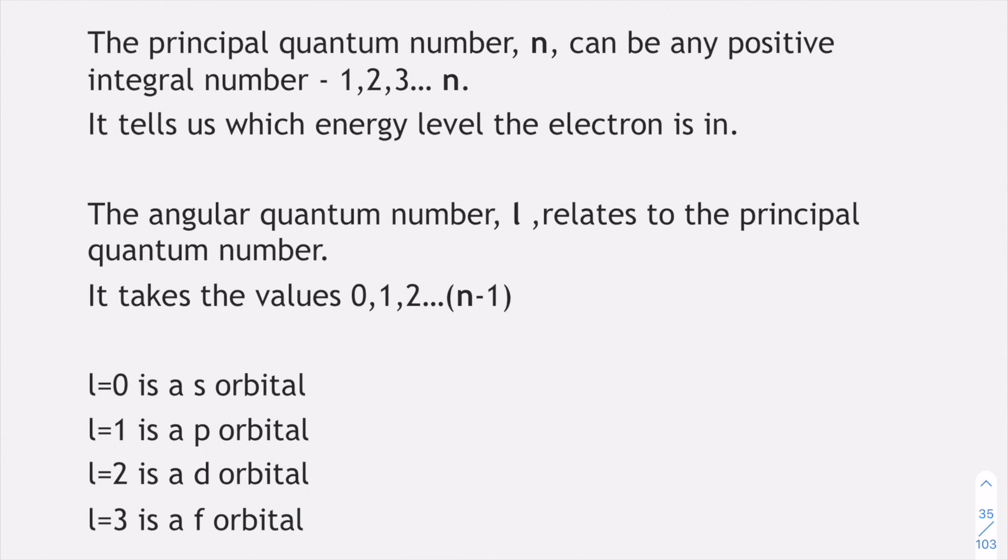The first one is n, which tells us what energy level the electron is. If we go back to your basic 2,8,1 of sodium, n equals 1 could be that first one, n equals 2 could be that second energy level. So it's just basically telling you the energy level.